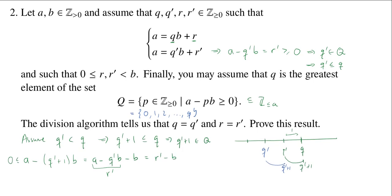So this is equal to R prime minus B. But the assumption is that R prime is strictly less than B, and so R prime minus B is strictly less than 0. And this is a contradiction because we now have 0 is less than or equal to, dot dot dot, less than 0.